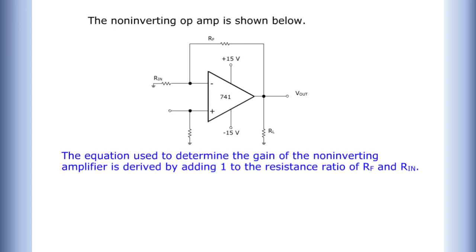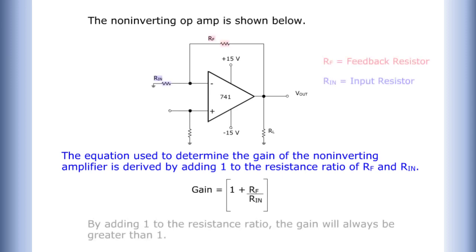The equation used to determine the gain of the non-inverting amplifier is derived by adding one to the resistance ratio of frequency and input. By adding one to the resistance ratio, the gain will always be greater than one.